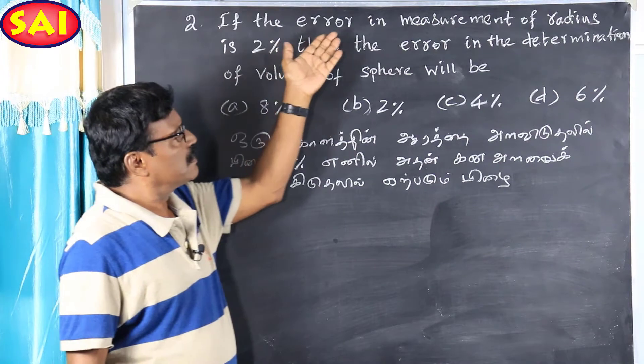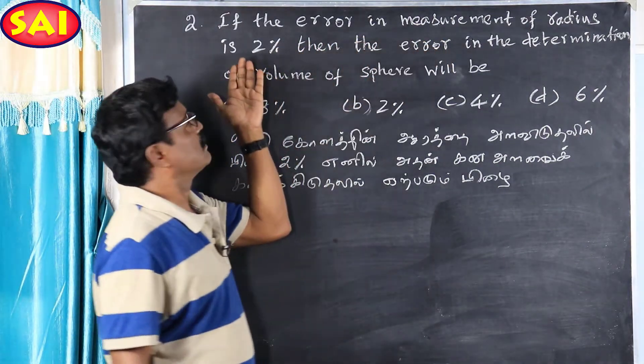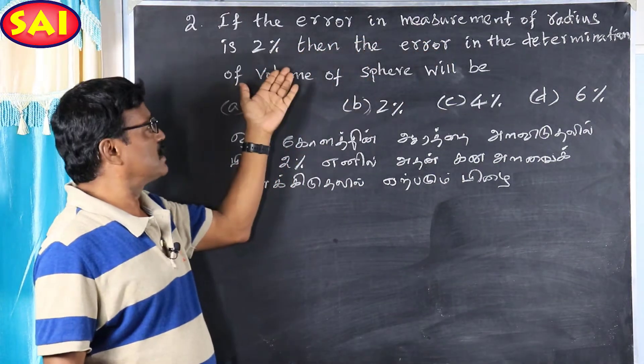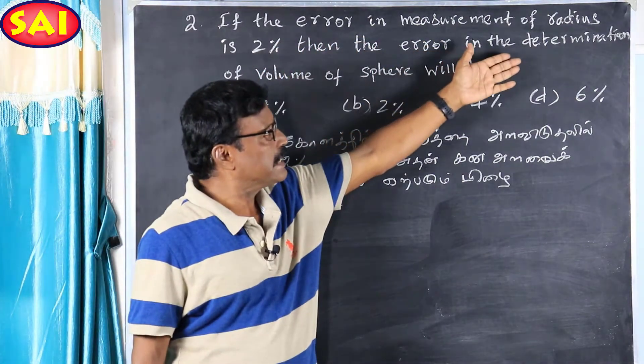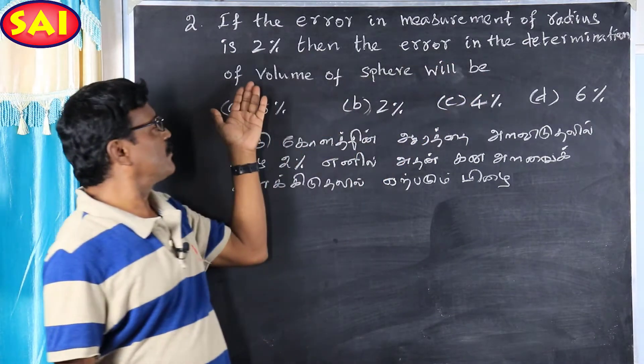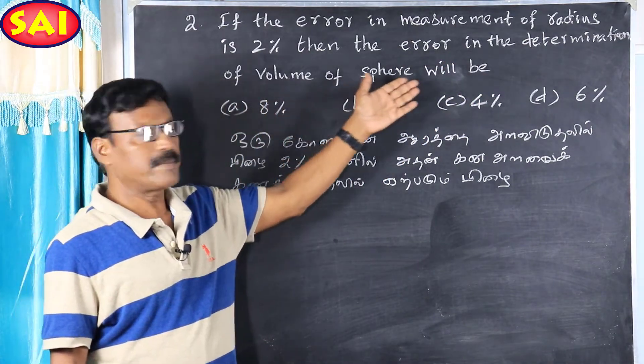If the error in measurement of radius is 2%, then the error in the determination of volume of a sphere will be?